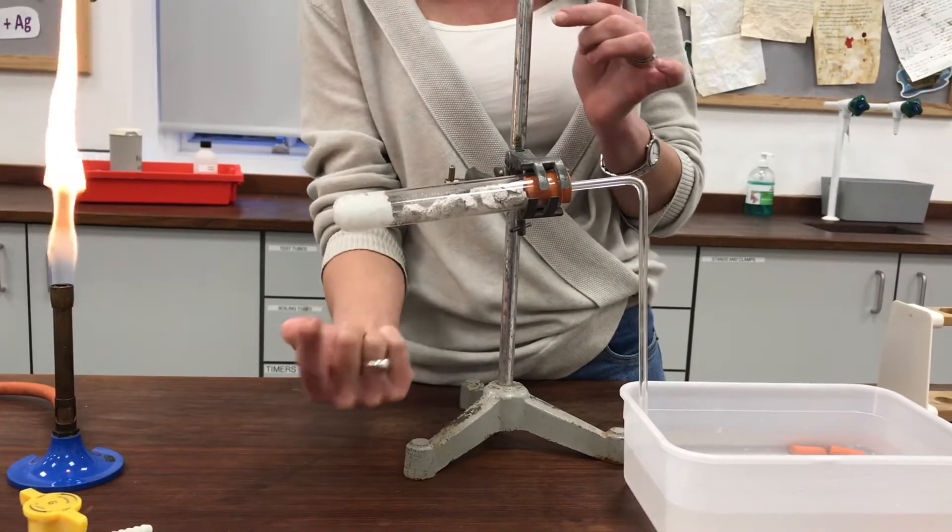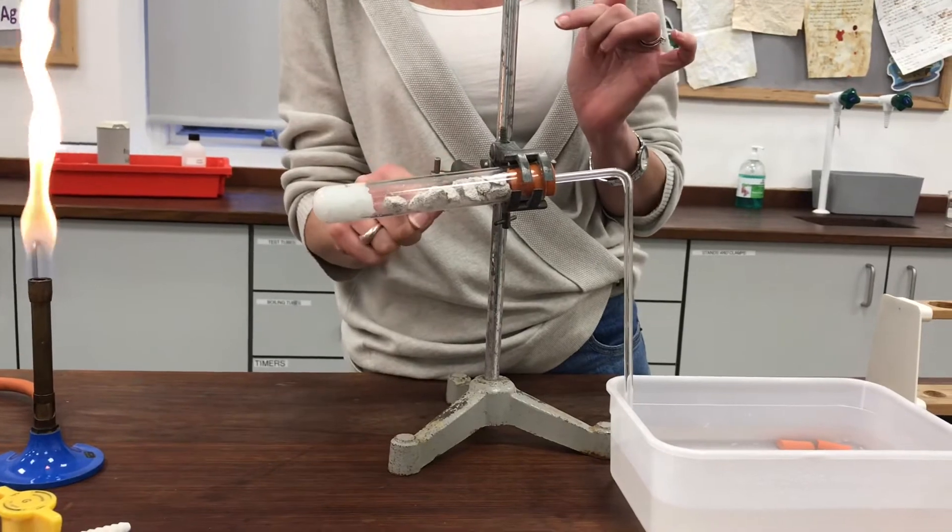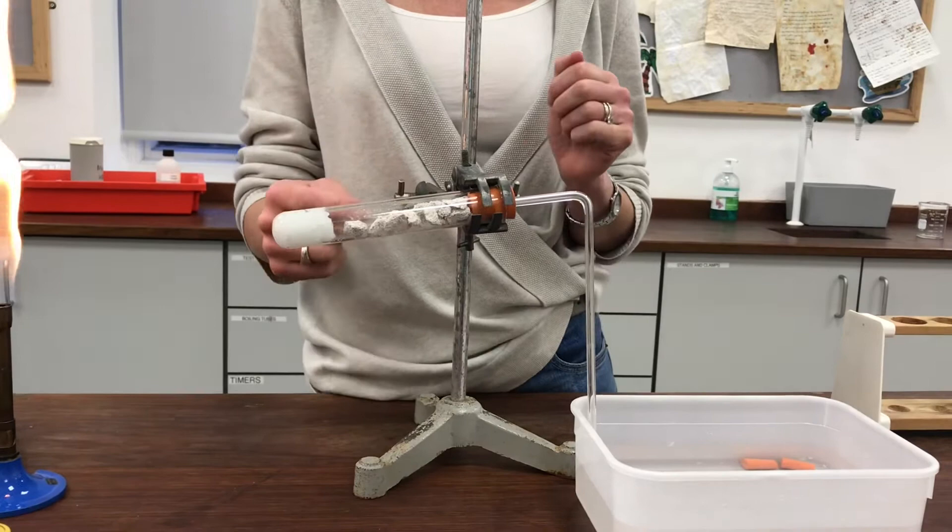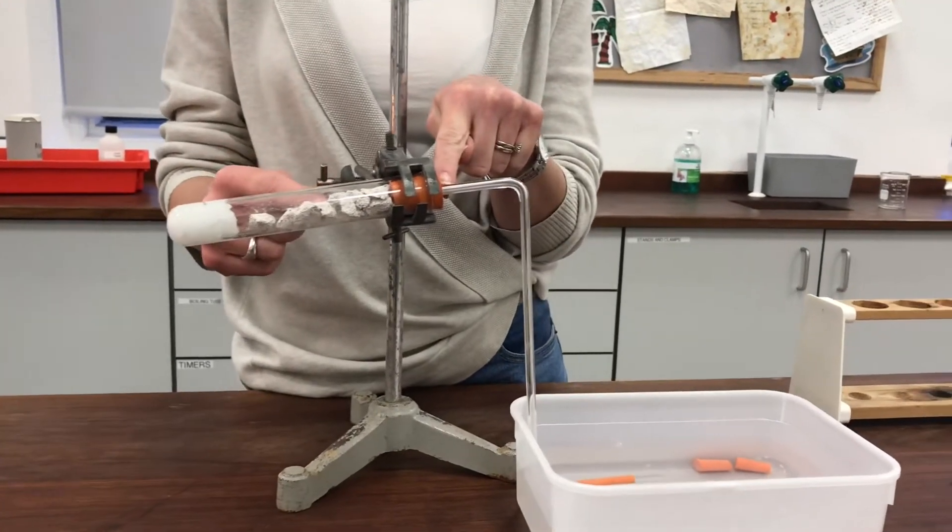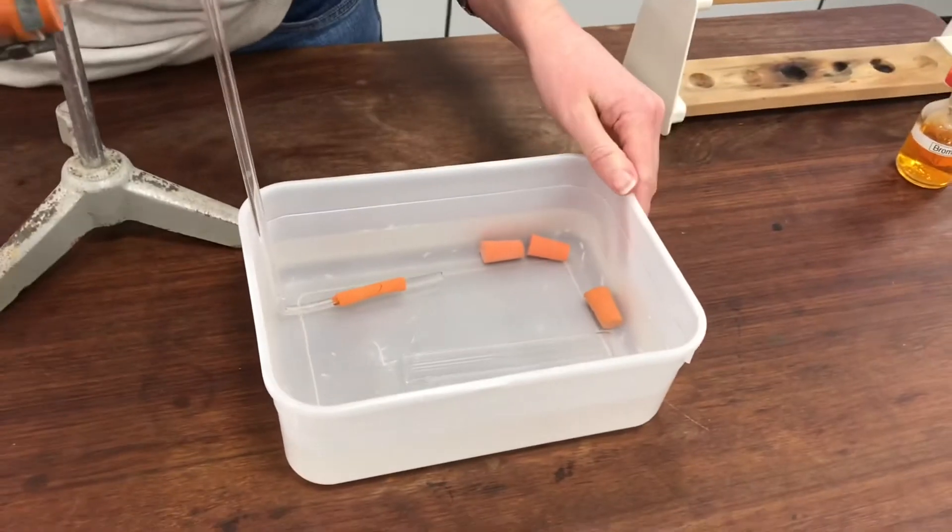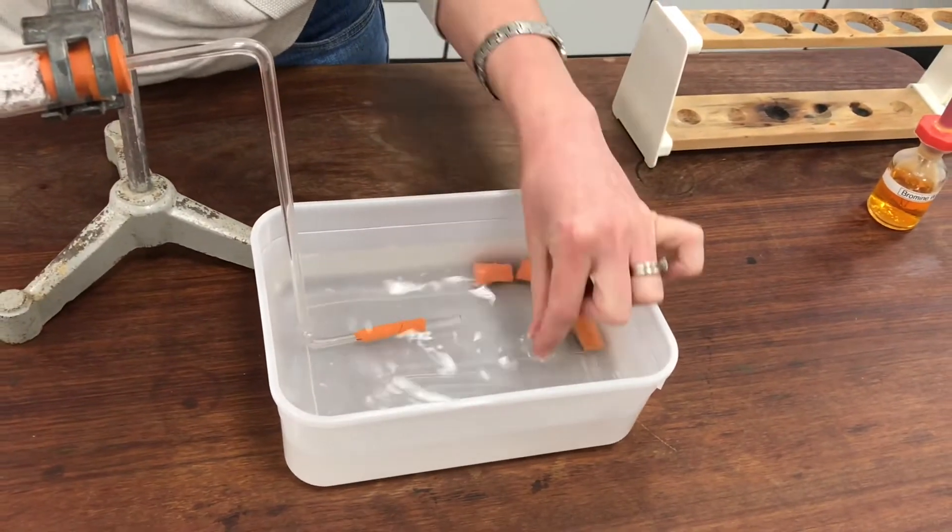so that the paraffin vaporises and hot paraffin passes over the hot catalyst. The cracking reaction should then occur and I'll end up with a smaller molecule moving along this delivery tube and down and out of the end here in the water bath.